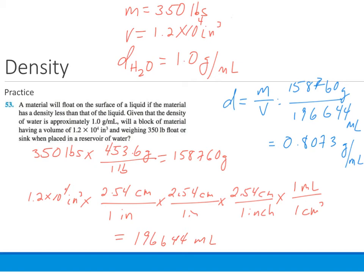Now, if I want to make sure that my significant figures are correct, we should go back and double check. We started off with 2 significant figures in my mass, so I should have 2 significant figures in the mass. And I started off with 2 in the volume, so I should have 2 in the volume. Therefore, my total number of significant figures, 2 over 2, should just be 2, which leads me to 0.81 grams per milliliter. And we see that that is indeed smaller than the 1.0 grams per milliliter. Therefore, the object would float if thrown into a reservoir.